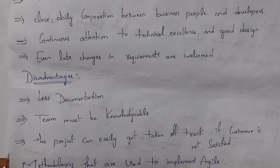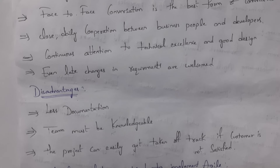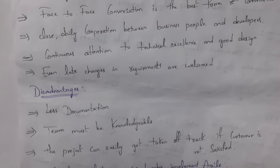These are the disadvantages of agile model. First disadvantage: less documentation — whereas waterfall model does complete documentation, agile model has very little documentation. Second disadvantage: the team must be knowledgeable — whenever a customer gives a new feature, the team must immediately update that feature in the existing software, so if team members lack knowledge it is impossible. Third disadvantage: the project can get off track if the customer is not satisfied — if after developing the software the customer is not satisfied, the company may need to start work from the beginning, since customer satisfaction is the highest priority.